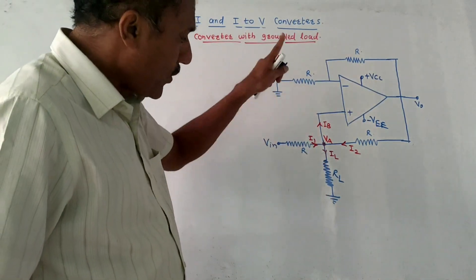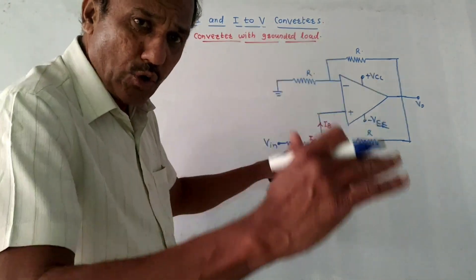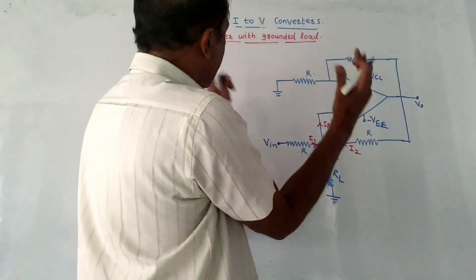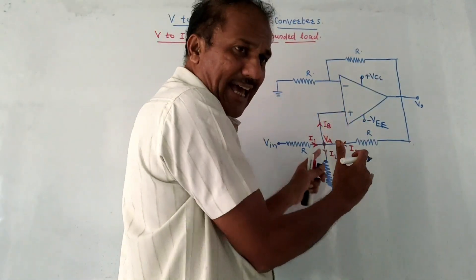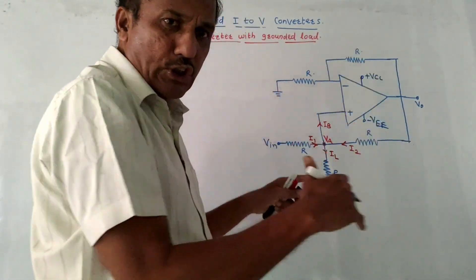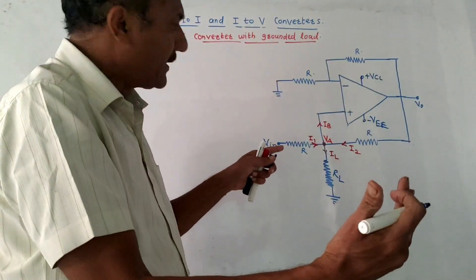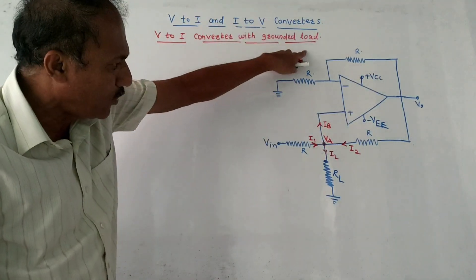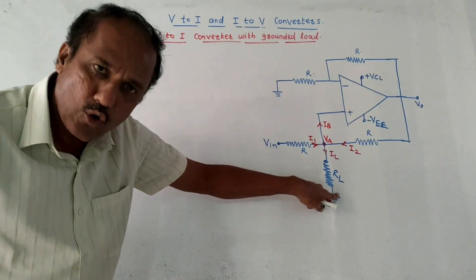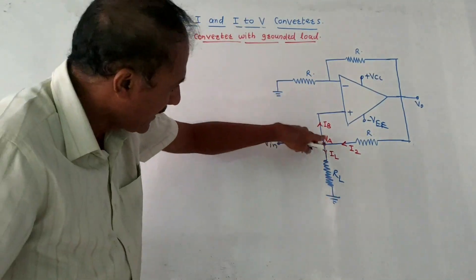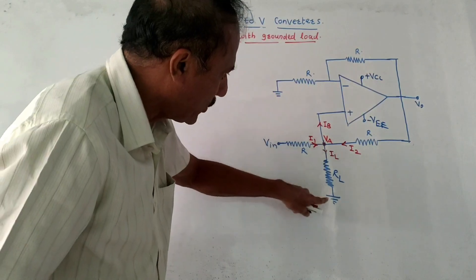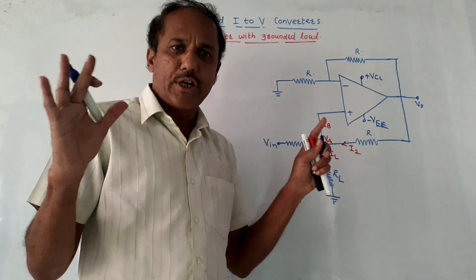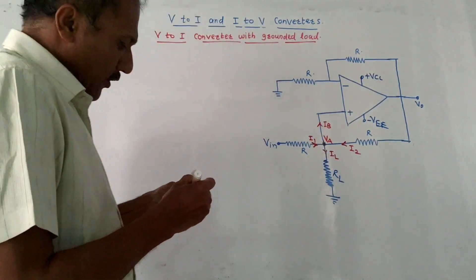Our aim is to convert voltage into current, so this circuit acts as a voltage to current converter. It is called a grounded load because RL, the load resistance, is connected to the ground.